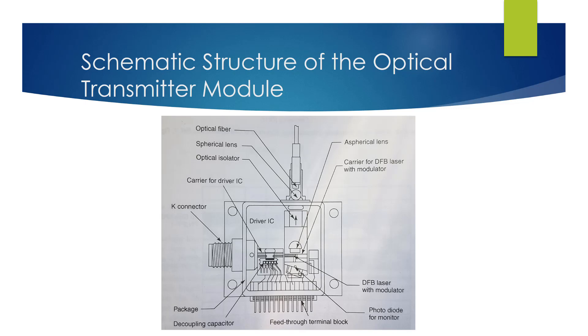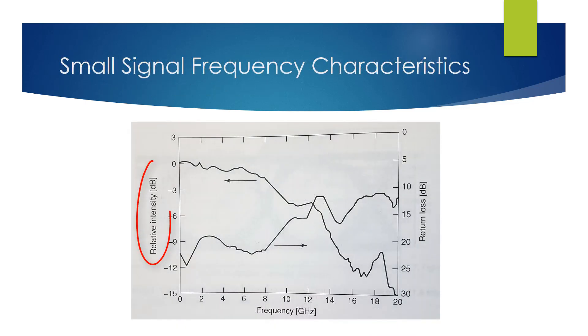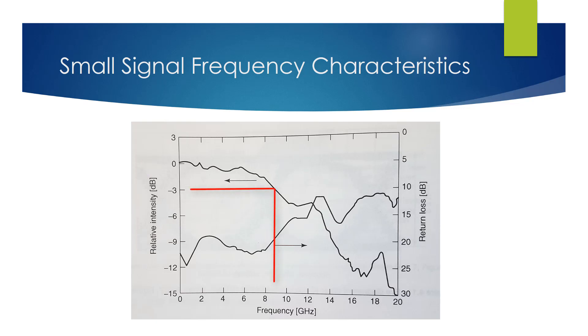This figure shows the small signal frequency response characteristics and return loss values. The negative 3 dB bandwidth is 9 GHz, and the return loss is 15 dB or more up to 12 GHz.